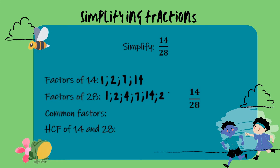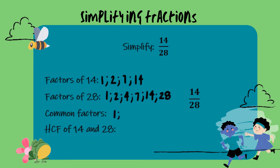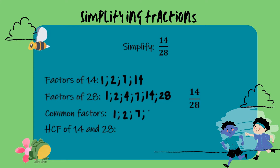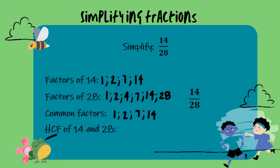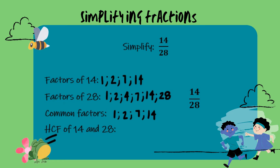14 and 28 have the following common factors: 1, 2, 7 and 14. But again we are looking for the highest common factor, and the highest common factor between 14 and 28 is 14.